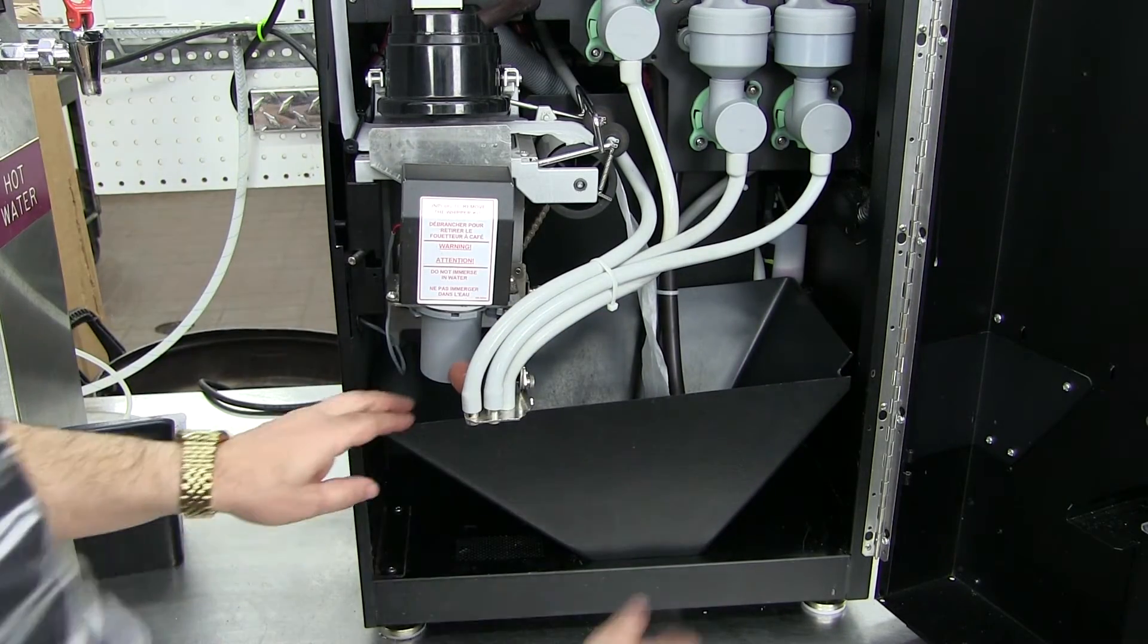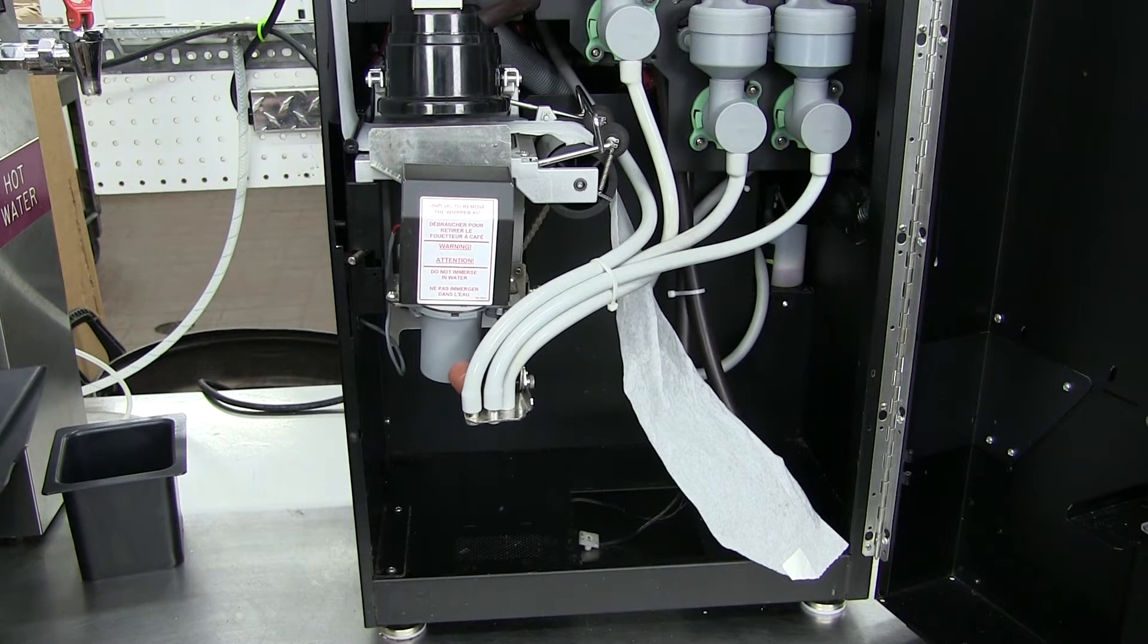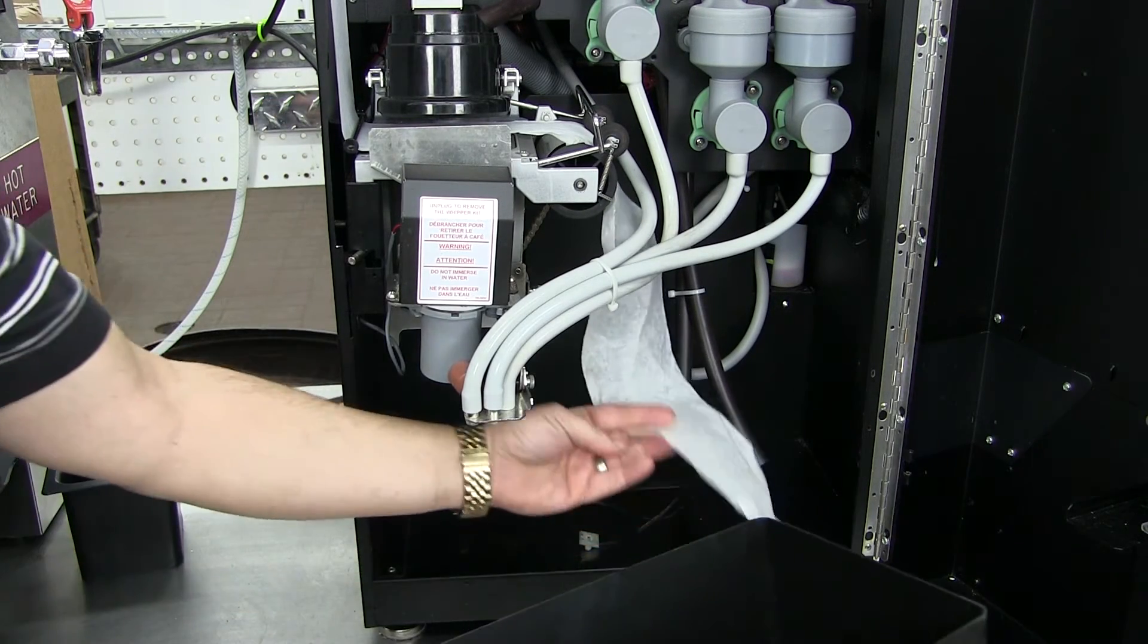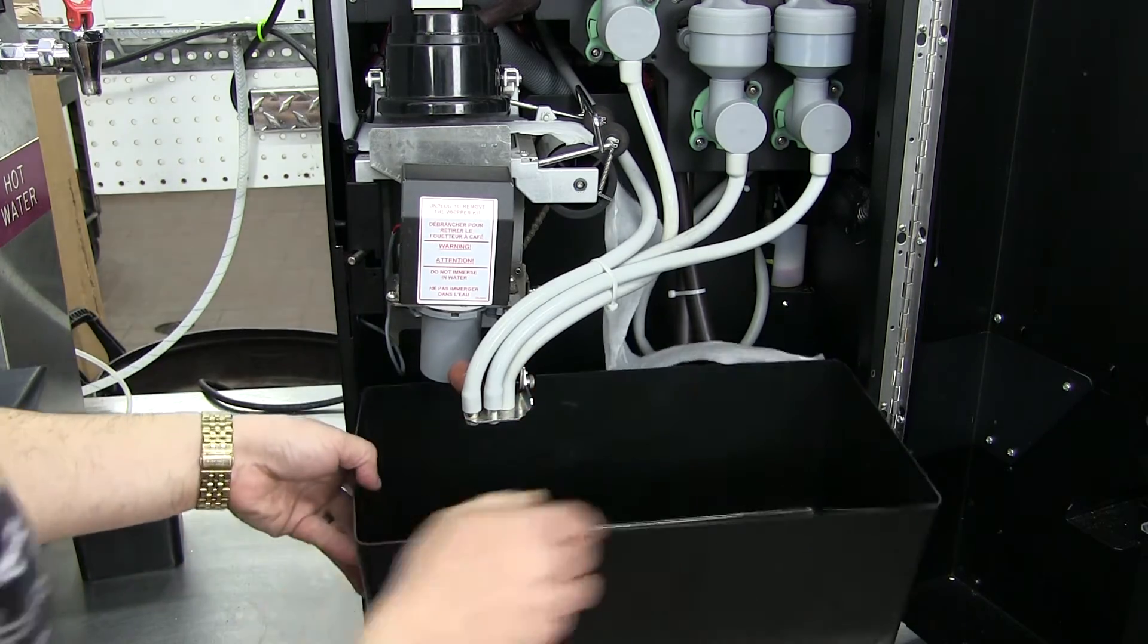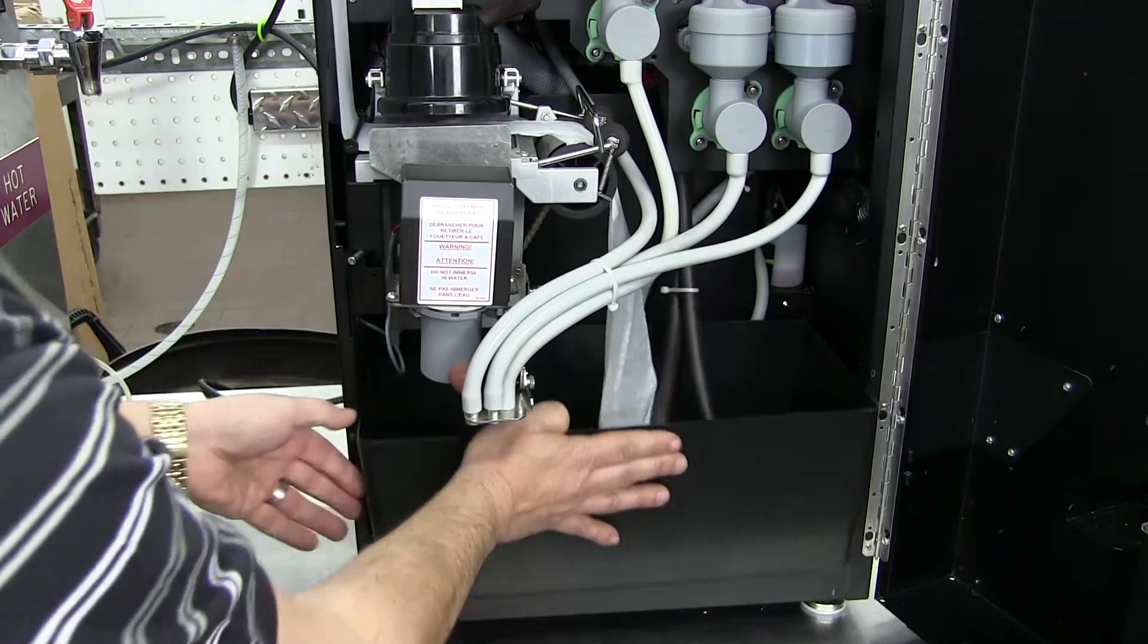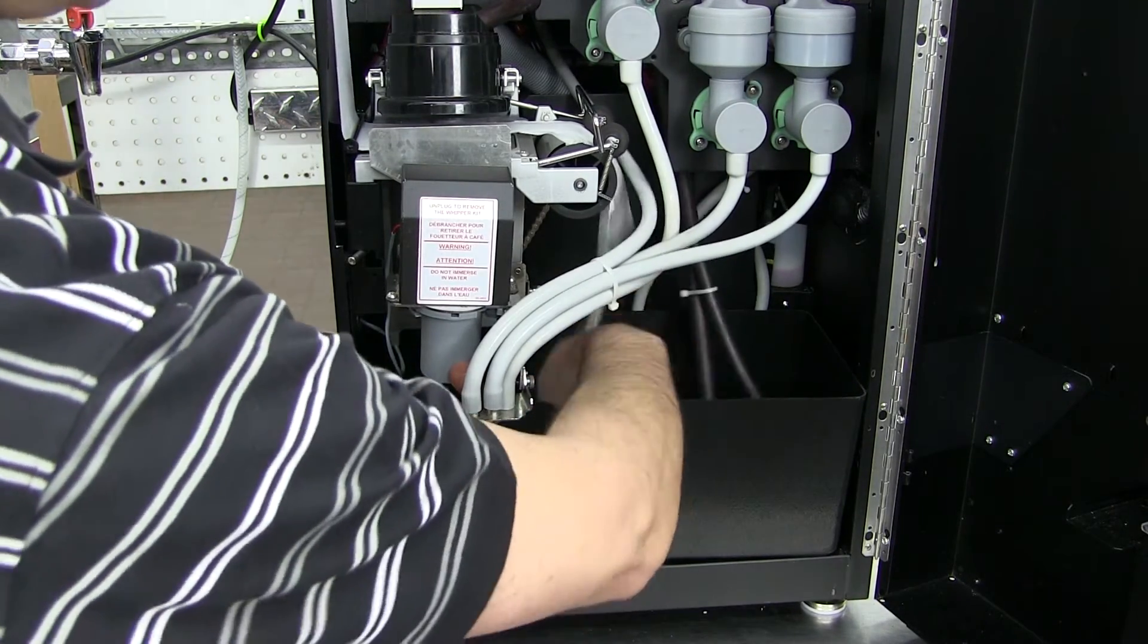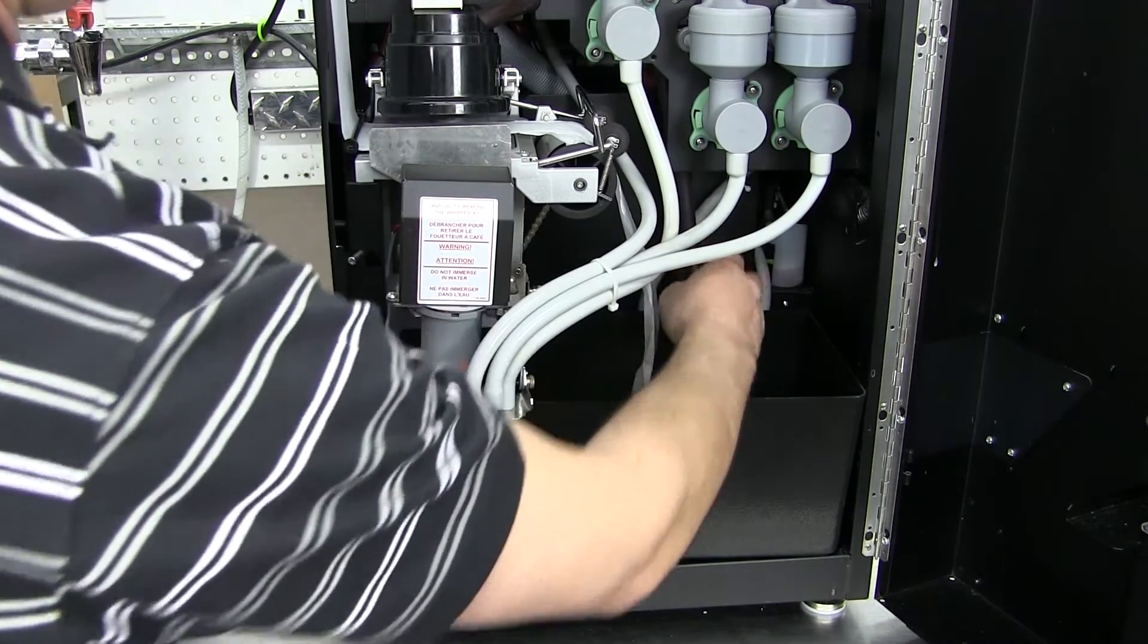If you're not using a funnel, if you're using an internal catch bin, then that bin would go right inside the base of your machine and you would take your brown hoses and put them inside of the base of your machine. Make sure that your paper is free to gather in the base of the machine.